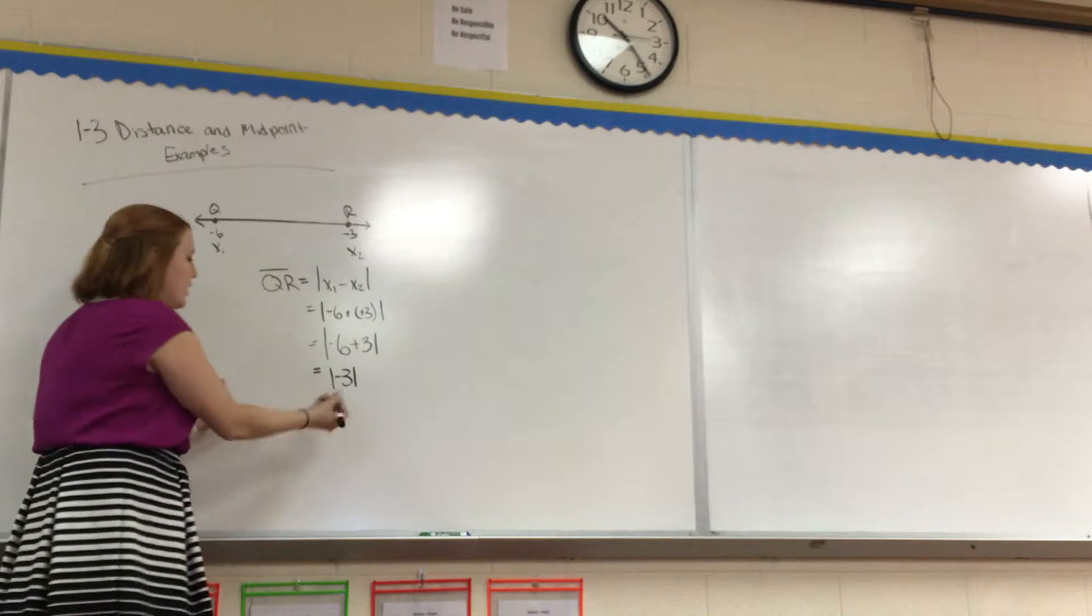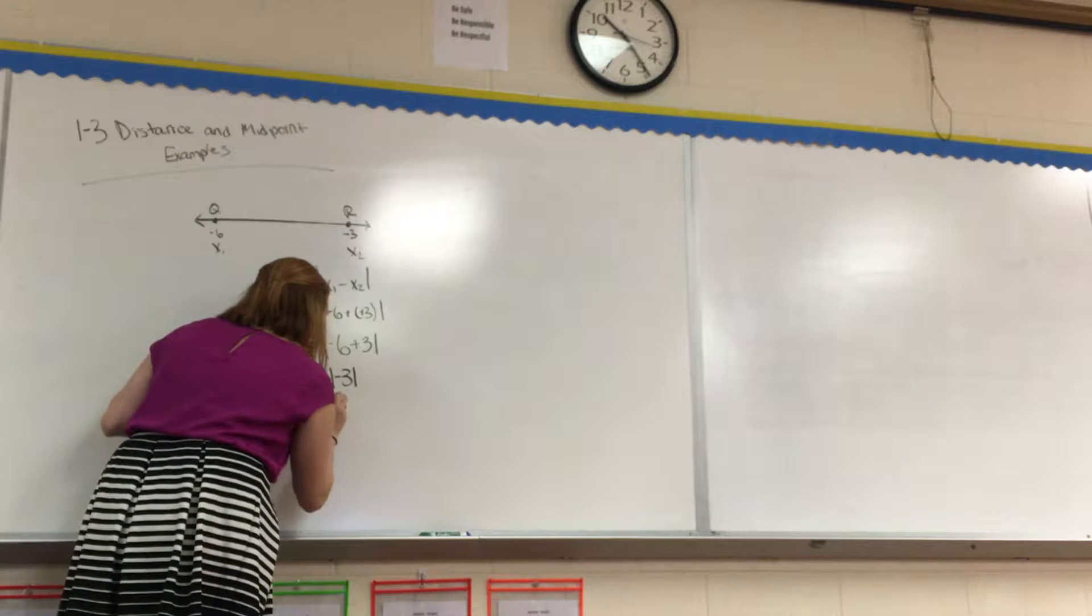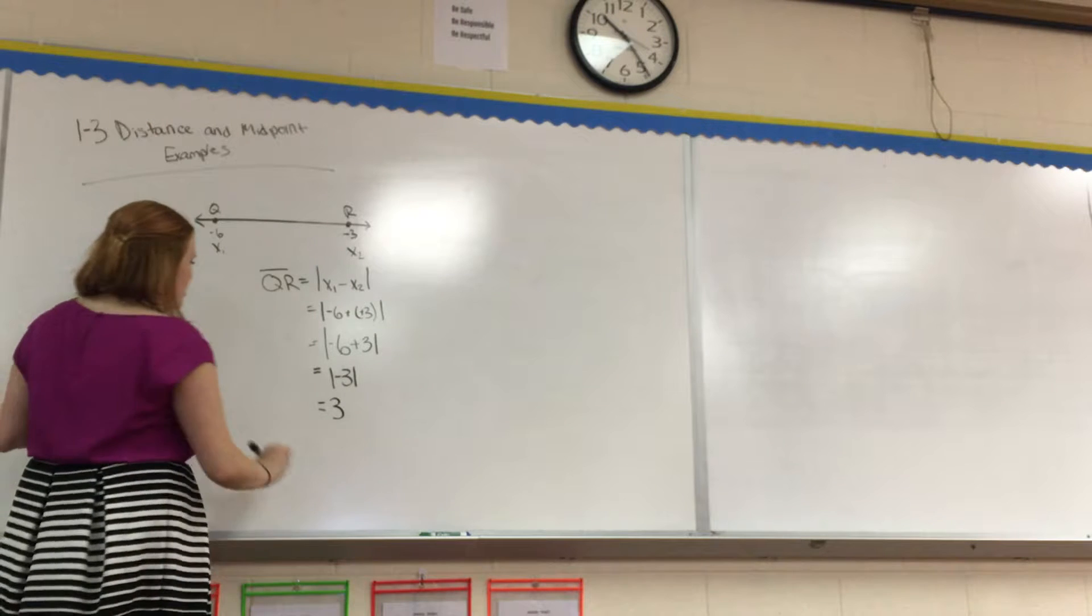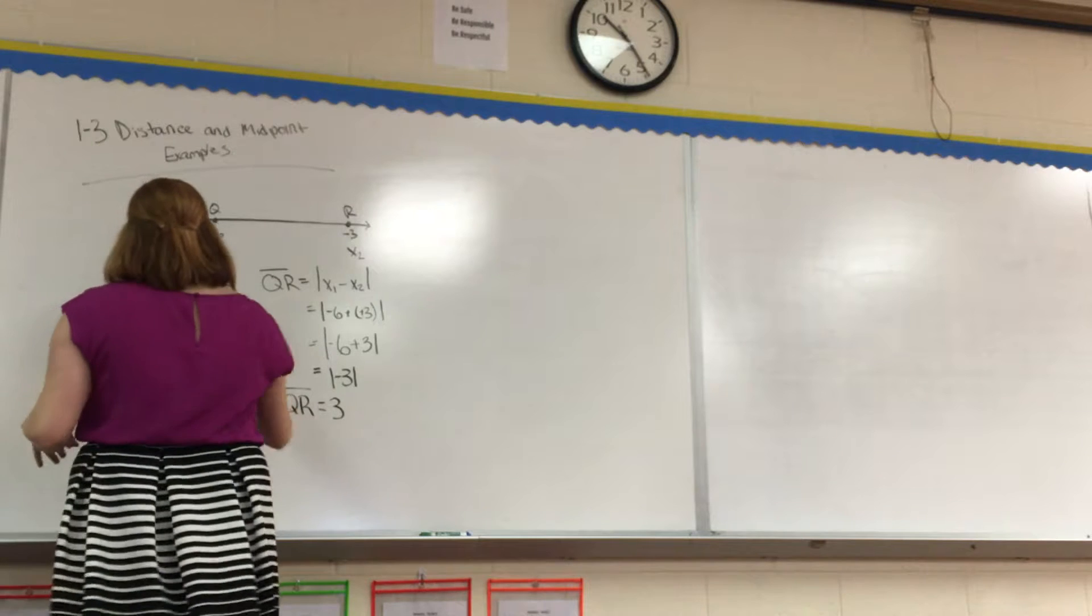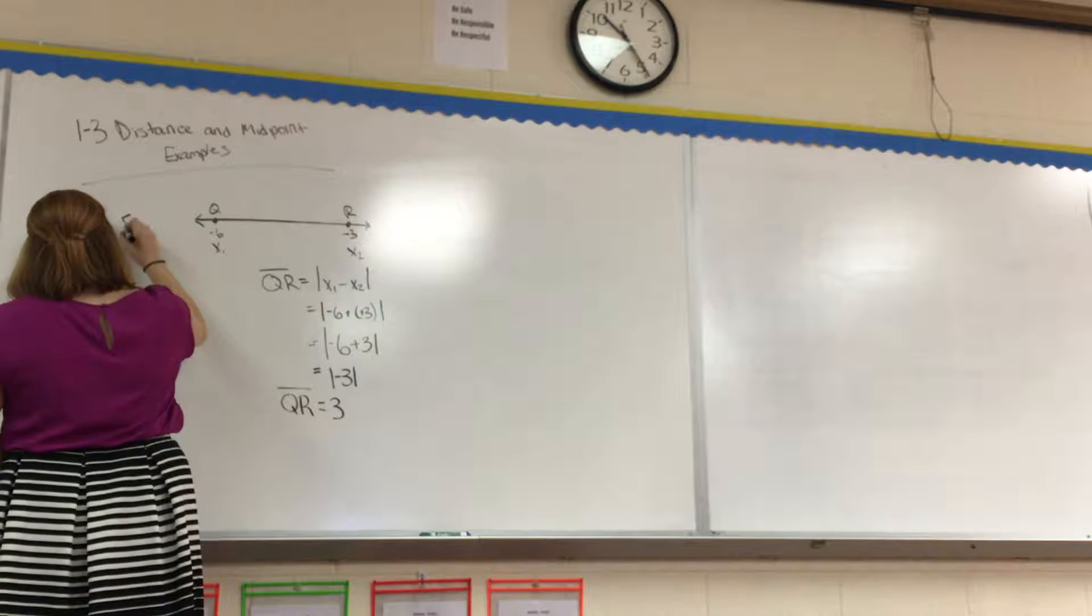Now what's the absolute value of negative 3? Absolute values change it to positive, so 3 is our answer, and the line segment QR, the distance of QR, is 3. So this is example 1.